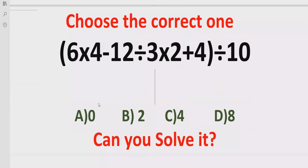Hello guys, welcome to my channel. Today we will solve another quiz which is related to arithmetic expression. The quiz contains the basic operations: plus, minus, multiplication, and division. We have to find the correct answer from the answer list: A is 0, B is 2, C is 4, and D is 8.